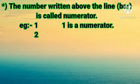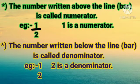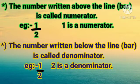The number written above the line, i.e. bar, is called the numerator. Example: in 1 upon 2, 1 is the numerator. The number written below the line, i.e. bar, is called the denominator. Example: in 1 upon 2, 2 is the denominator.